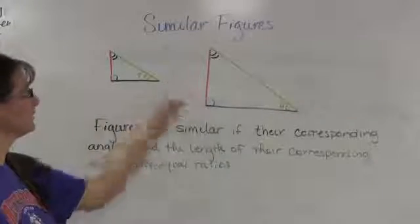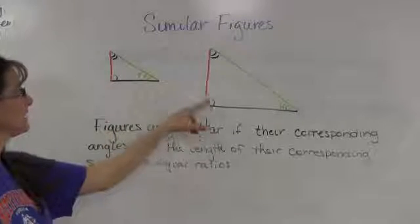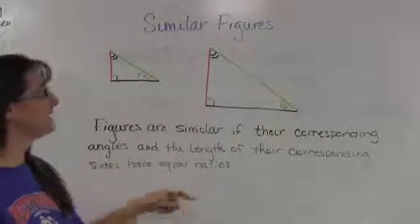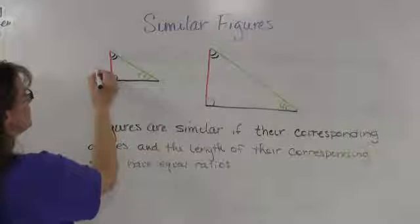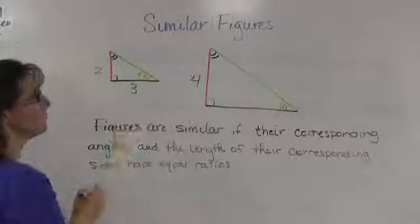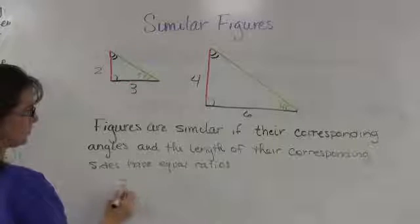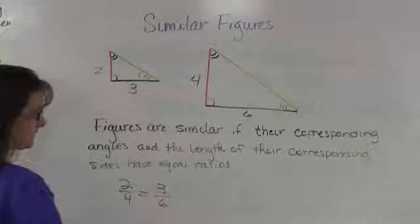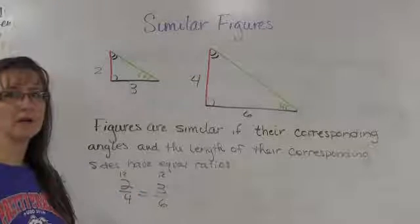Here I have two similar triangles. I know that the triangles are similar if their corresponding angles are the same — the blue angles are the same, the black angles are the same, the green angles are the same — and the length of the corresponding sides have equal ratios. So if the red side is 2 and the other red side is 4, then the black side could be 3, but the other black side would have to be 6. Because 2 over 4 equals 3 over 6, and using cross products, 4 times 3 is 12 and 6 times 2 is 12, so these are equal ratios. Therefore these are similar triangles.